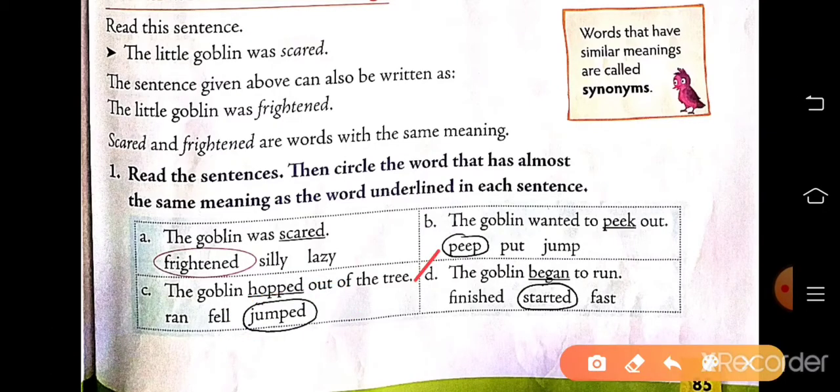Number D: the goblin began to run. The underlined word is began, so the almost same meaning of beginning is finished, started, or fast. The same meaning is started, so circle started. So like this you have to do.